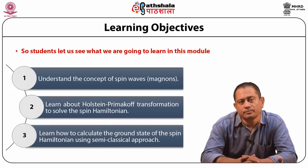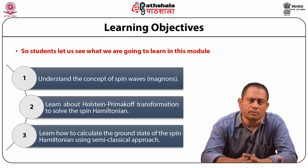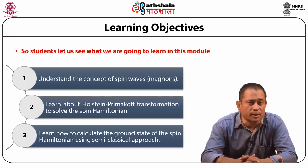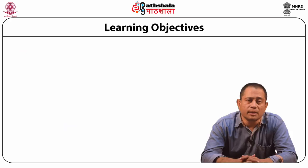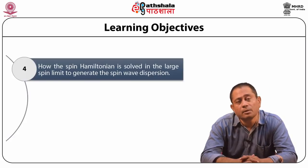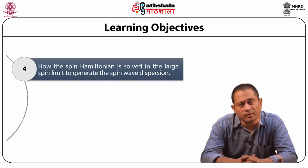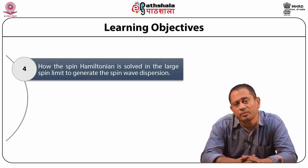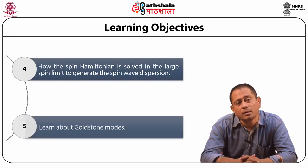Learn how to calculate the ground state of the spin Hamiltonian using a semi-classical approach. The first thing one should learn when given a Hamiltonian is to calculate the ground state. Then, how the spin Hamiltonian is solved in the large spin limit to generate the spin wave dispersion. And finally, from the spin wave dispersion, we will learn about the famous Goldstone modes.